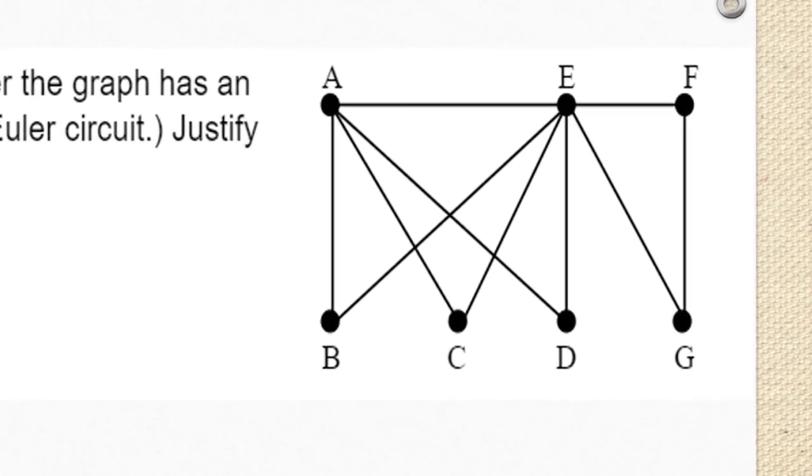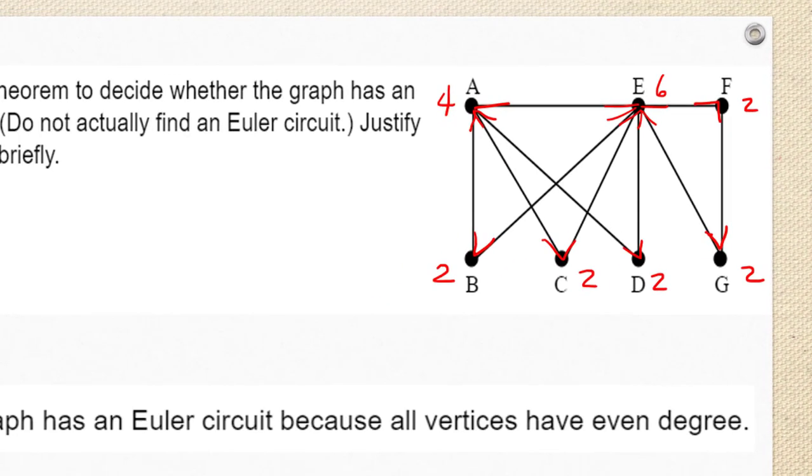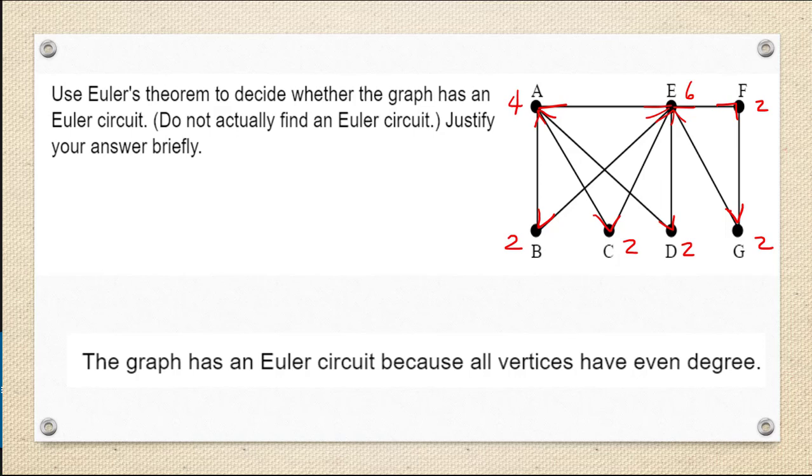How about this graph? Vertex A has degree four. Vertex B, degree two. Vertex C, degree two. Vertex D, degree two. Vertex E has six edges, that's even as well. Vertex F, degree two. And vertex G, degree two. All of the vertices have even degree, so this one must have an Euler circuit.